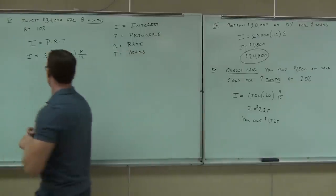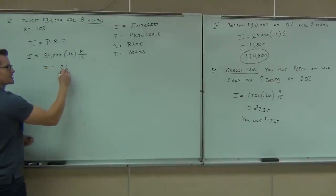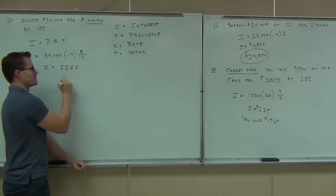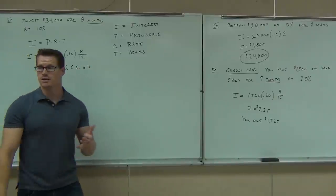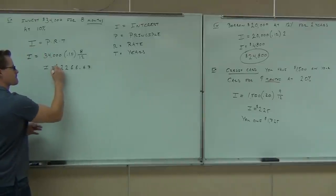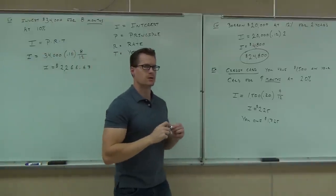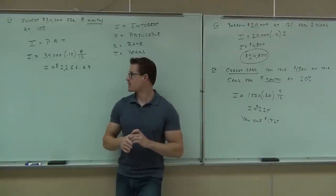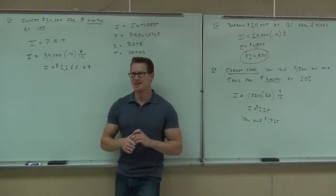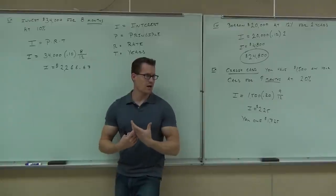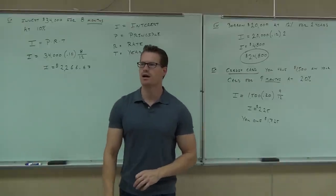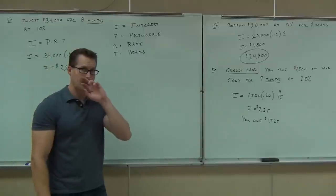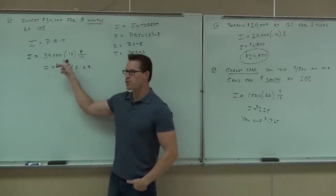You should get $2,266.67. Round to the pennies because we're talking about money. Would you do the investment? If someone came to you and said: give me your money for eight months, and I'll give you back your $34,000 plus $2,266 — it depends on the friend. But if it's someone you trust, probably yes, because you'd make over two grand in eight months for doing nothing. You only get about .1% at the bank — not even 1%, not even 10%. Remember: you cannot round until the very, very last step.